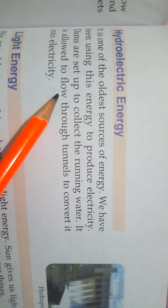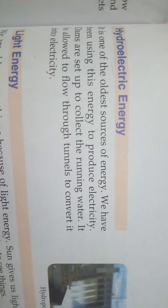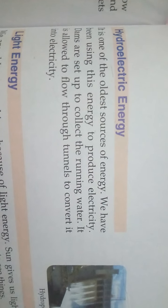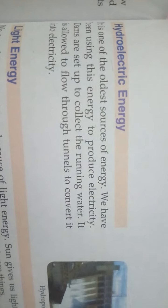The water stored behind the dam has potential energy. It is allowed to flow through tunnels to convert it into electricity. The flowing water turns the turbines — the turbines rotate or spin, generating electrical energy.